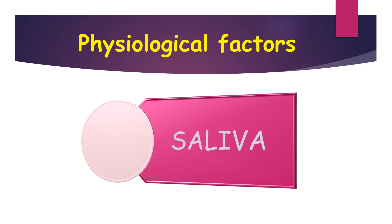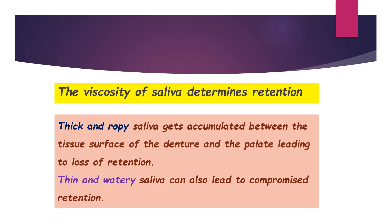Coming to physiological factors, the major physiological factor is saliva. The viscosity of saliva determines retention. Thick and ropy saliva gets accumulated between the tissue surface of the denture and the palate, leading to loss of retention. Thin and watery saliva can also lead to compromised retention. So both thick ropy saliva and thin watery saliva contribute to compromised retention.